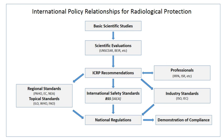The ICRP uses the following overall principles for all controllable exposure situations. Justification: no unnecessary use of radiation is permitted, meaning the advantages must outweigh the disadvantages. Limitation: each individual must be protected against risks that are too great through the application of individual radiation dose limits. Optimization: this process means 'the likelihood of incurring exposures, the number of people exposed, and the magnitude of their individual doses should all be kept as low as reasonably achievable,' known as ALARA or ALARP, taking into account economic and societal factors.